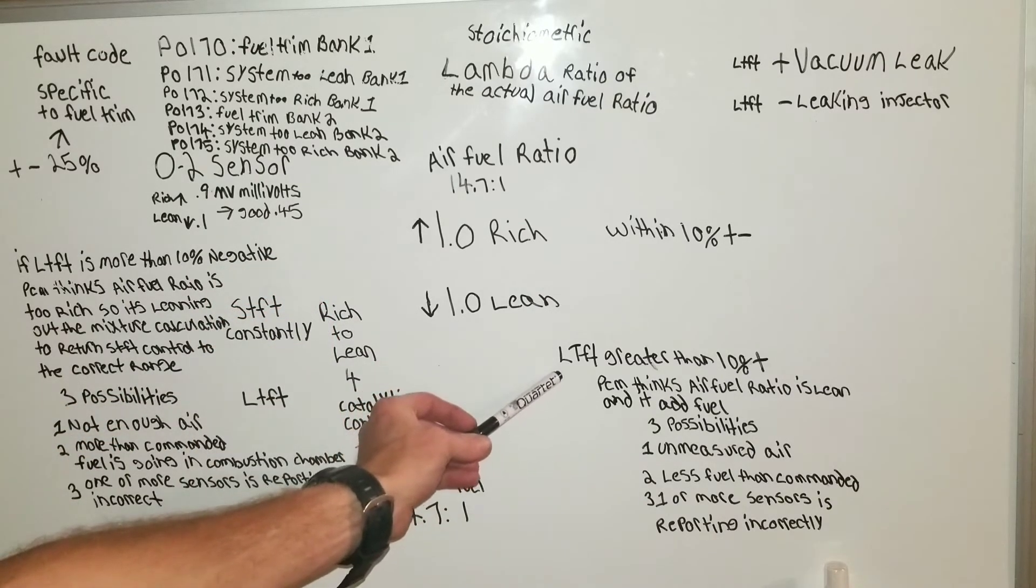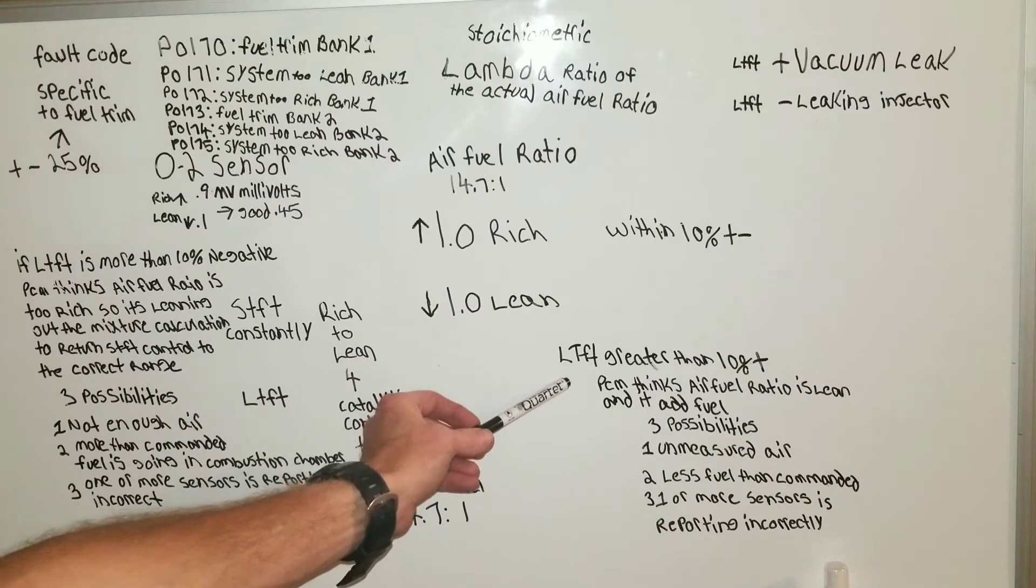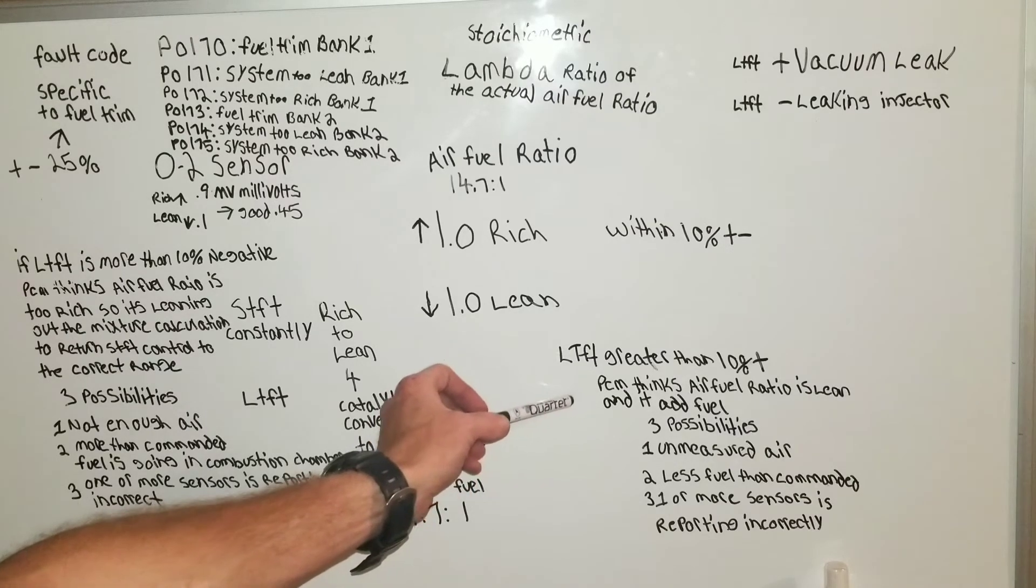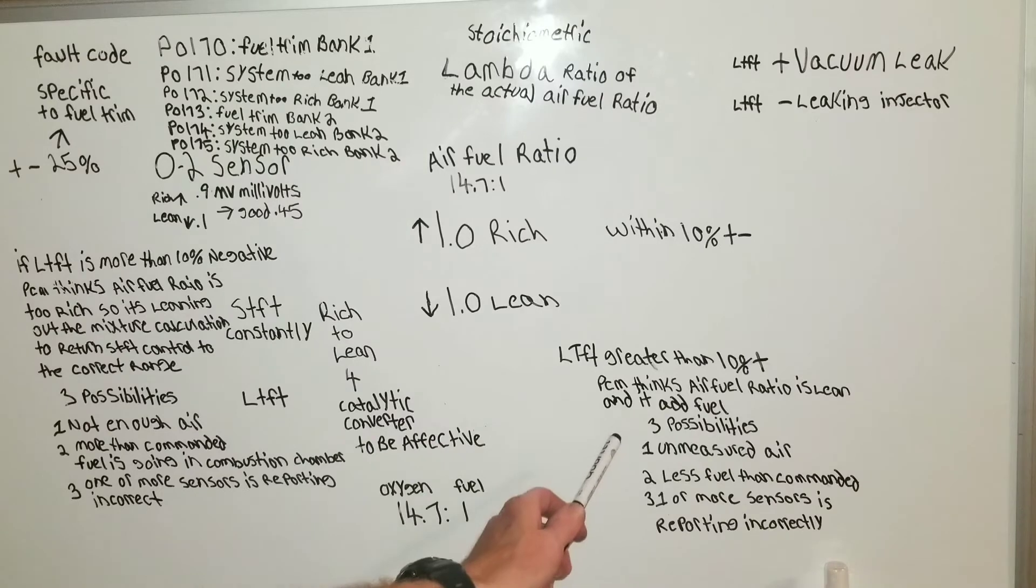So now if you have a long term fuel trim that's greater than 10%, PCM thinks air fuel ratio is lean and it adds fuel.